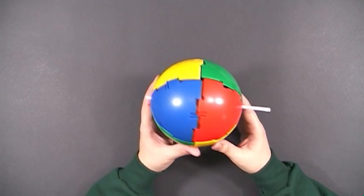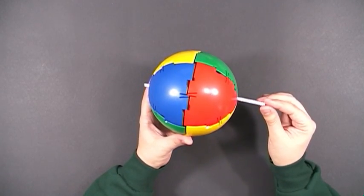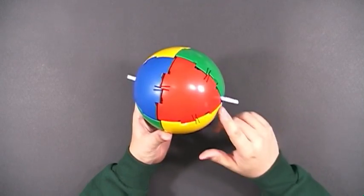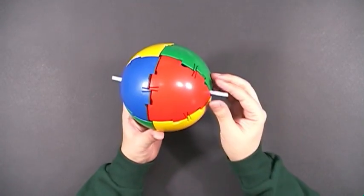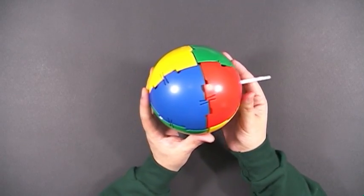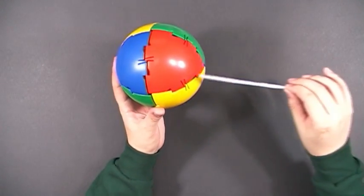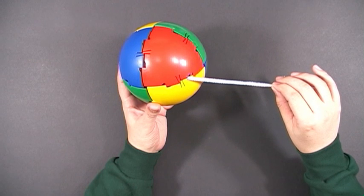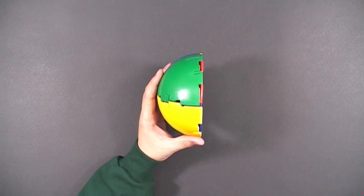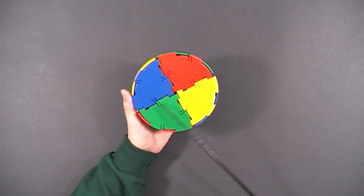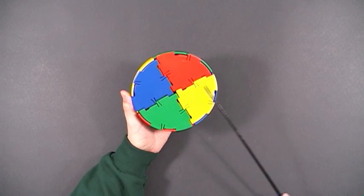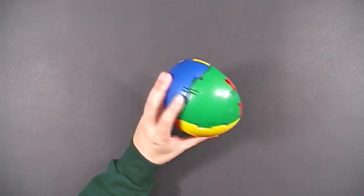One way of measuring the diameter of a sphere is to just insert a pipe cleaner from one end to the other and then carefully measure its length.